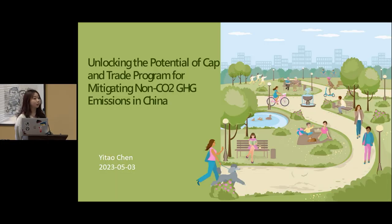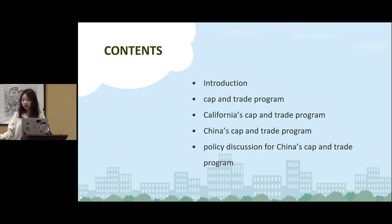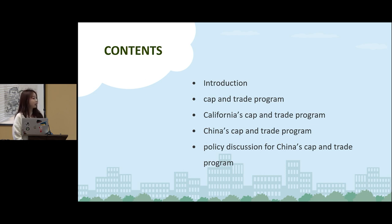Hi everyone, I'm Itao and my research topic is unlocking the potential of cap and trade programs for mitigating non-carbon dioxide greenhouse gas emissions in China. Here are the contents for today: first I'll introduce climate change and non-CO2 greenhouse gases and the cap and trade program, then I'll analyze California's and China's cap and trade programs, and finally I'll have some policy discussion and suggestions for China's cap and trade program.